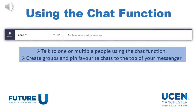Another useful function is the Chat box. Using this, you can talk to specific people or groups. By entering a person's name or email, you can start talking to them. You can also put in multiple names and emails to create a group, name this group a specific thing, and pin your favourite chat to the top of your messenger. This can be a great way to talk to specific people about things on your course or even just outside of it.